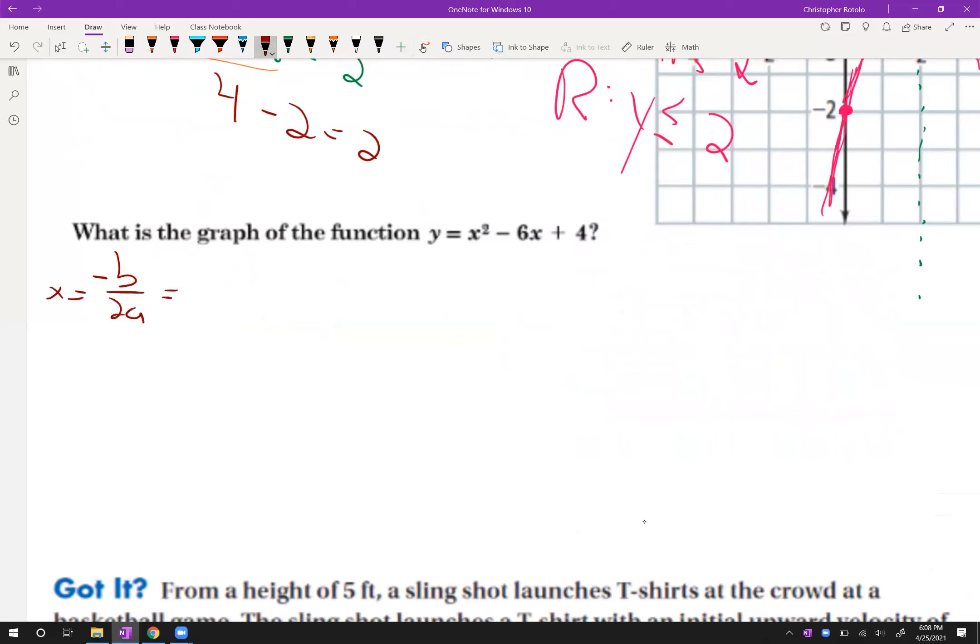All right. So I got negative B over 2A. That's going to give me my x value, x equals. So I got negative, negative 6, positive 6 over 2 times 1. I get 6 over 2 is 3. So x equals 3. 1, 2, 3. So I can do a dash line there.